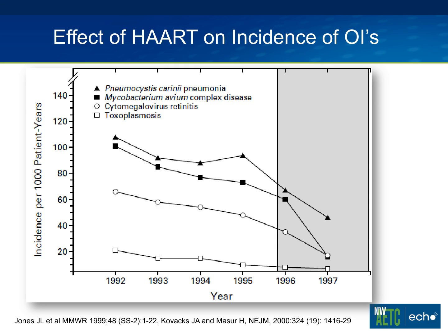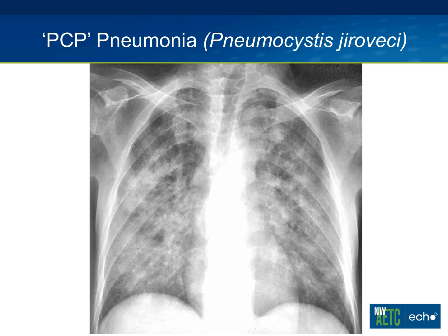The effect of HAART on the incidence of OIs has been very good — it has declined for almost all opportunistic infections. The decline was actually happening before good HAART became available in late 1995 and early 1996, likely due to good prophylactic remedies for PCP, MAC, and toxo. But once good antiretroviral therapy became available at the end of 1995, the incidence of all opportunistic infections has continued to fall.